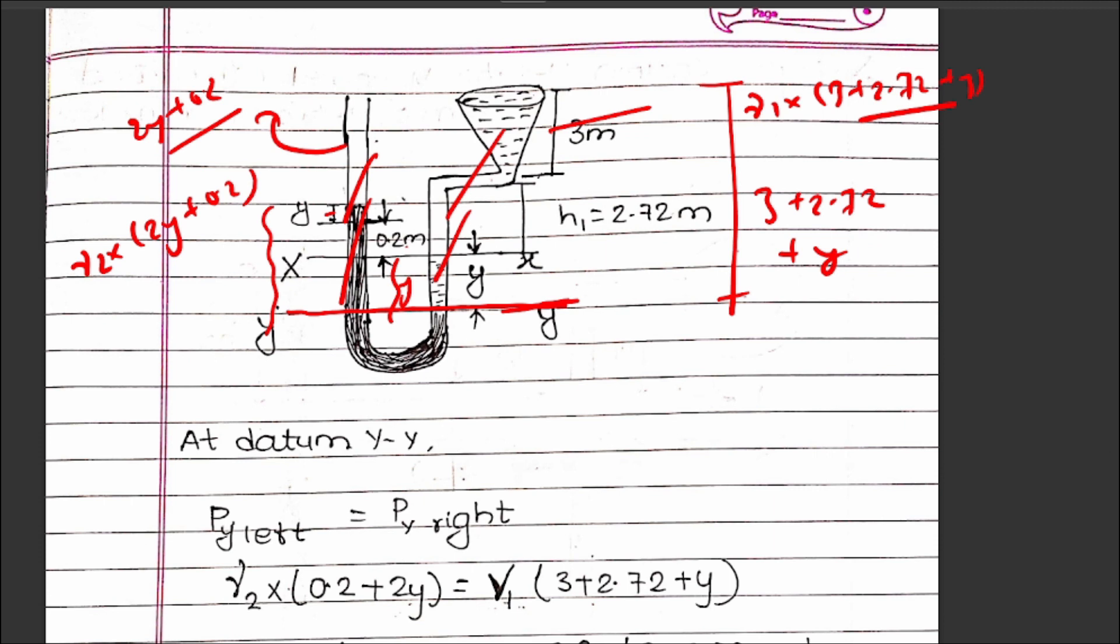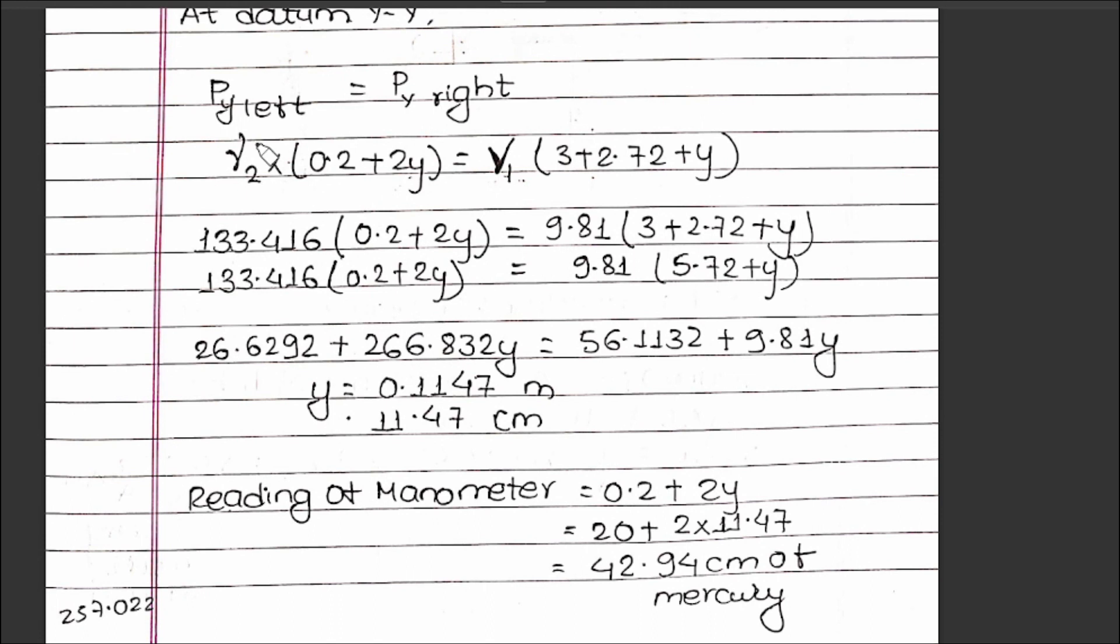Substituting values: 133.416 times (0.2 + 2y) equals 9.81 times (5.72 + y). Expanding: 26.6292 + 266.832y equals 56.1132 + 9.81y. Solving for y gives y equals 0.1147 meters or 11.47 cm.